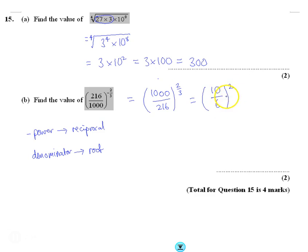So we've got 10 over 6 squared. Well we could square them and then simplify, but I'm going to simplify first.